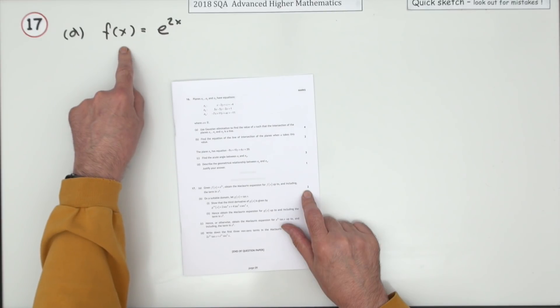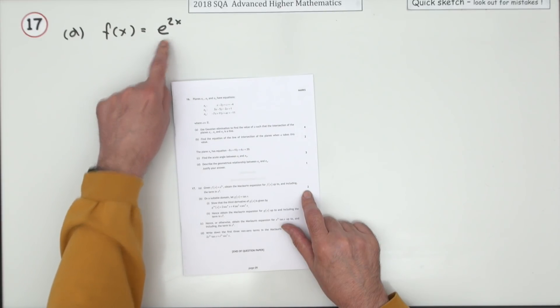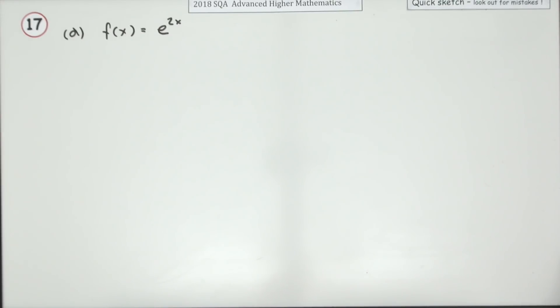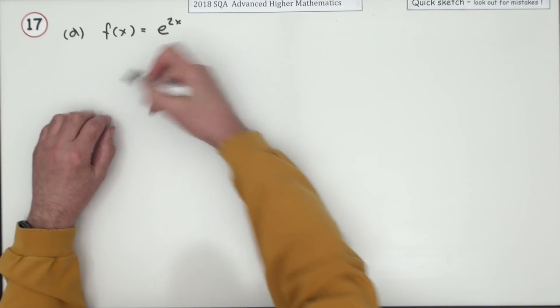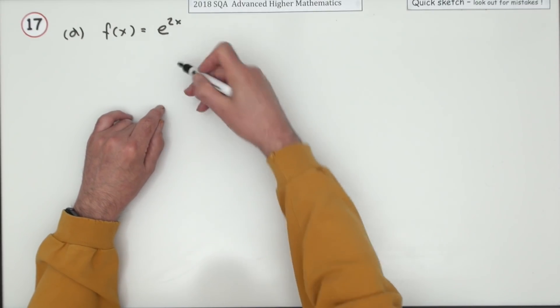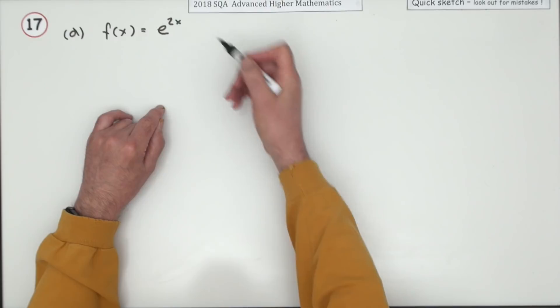Obtain the McLaurin's expansion for e to the 2x up to and including the term in x cubed. Well, it wouldn't take much to go through the first three derivatives of that because all that's going to happen is it's going to keep reappearing itself, only getting multiplied by two each time.